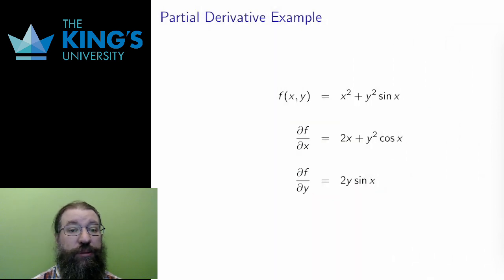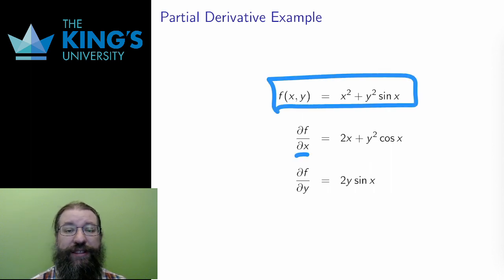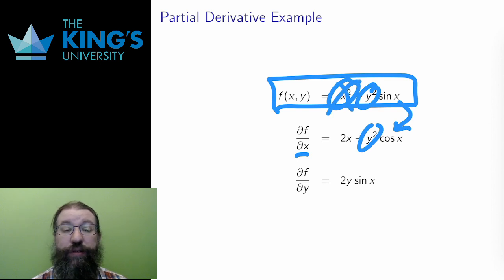So, here are some examples. This is a scalar field. Its partial in x comes from treating y as a constant. So the y squared just remains as a constant in front of the sin x derivative. Its partial in y treats x as a constant, which means that the x squared term is entirely constant and has derivative 0 in y. The sin x term is also constant and just remains multiplied by the derivative of y squared.